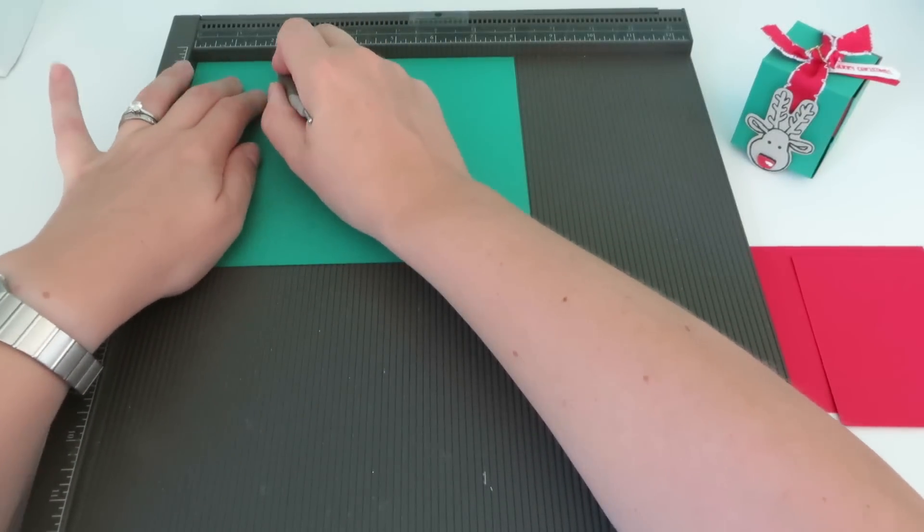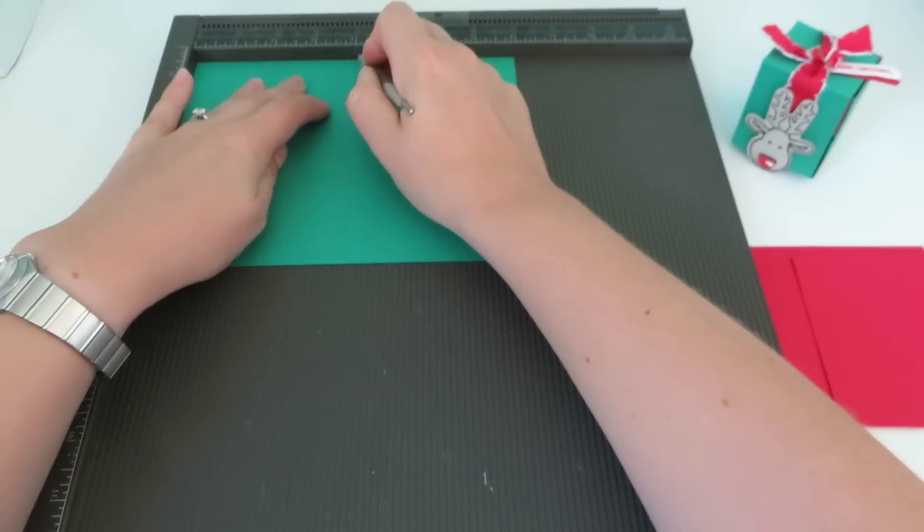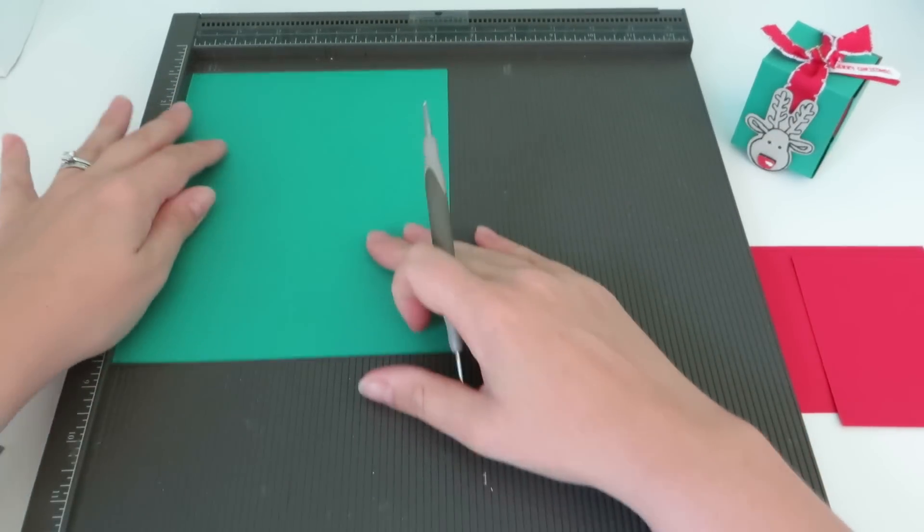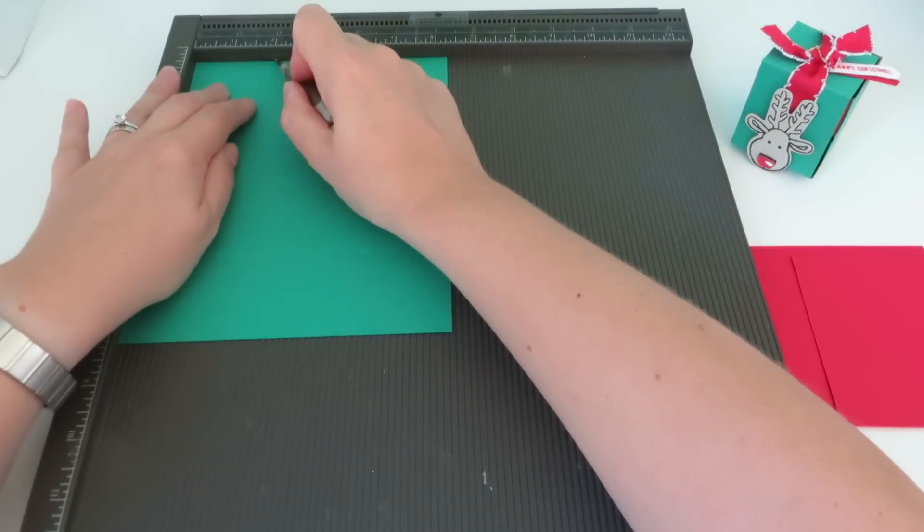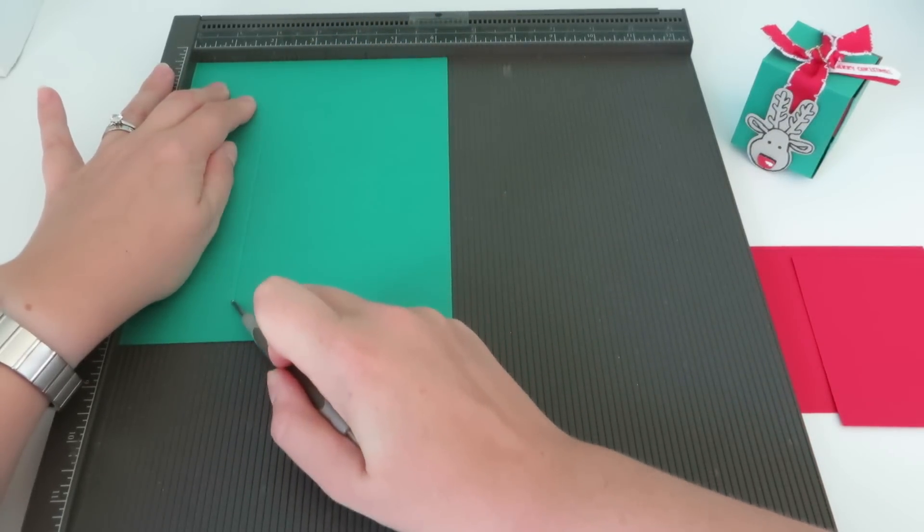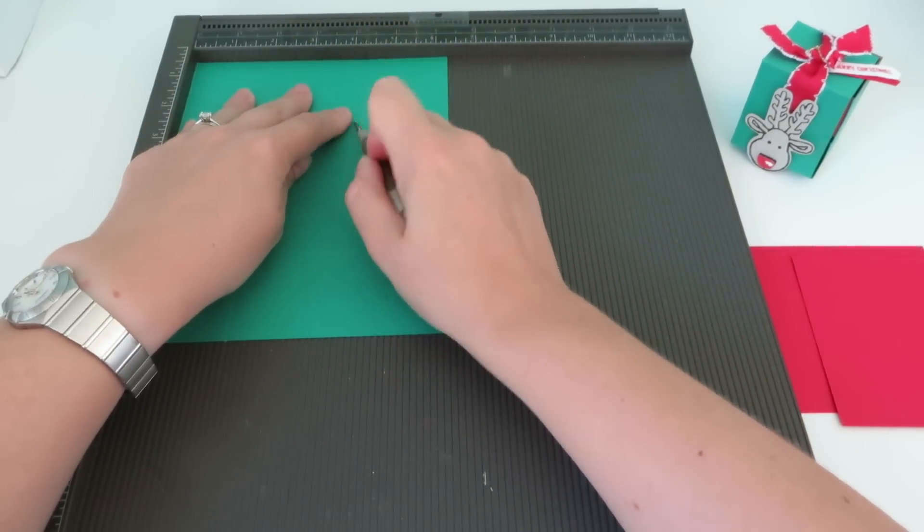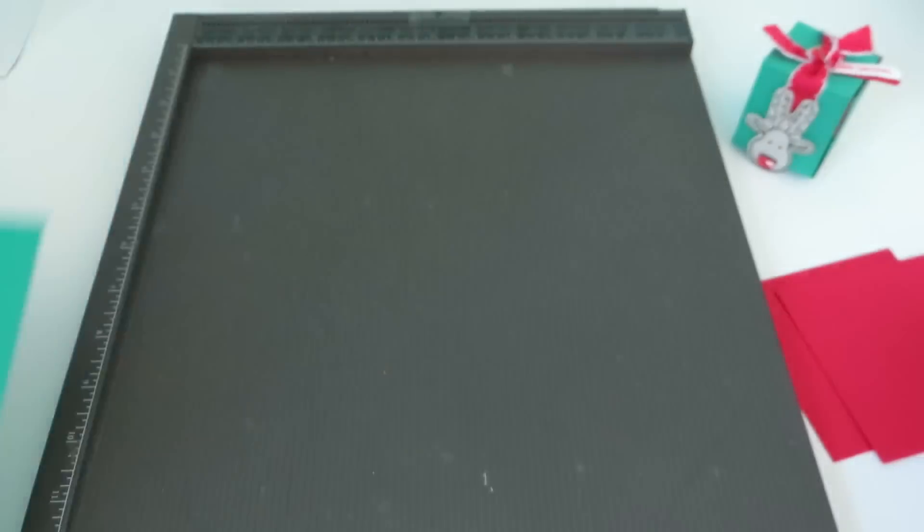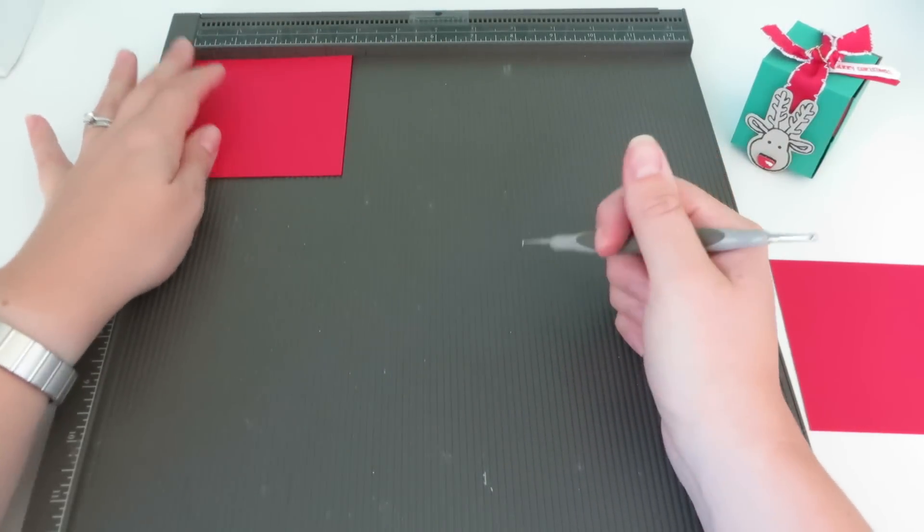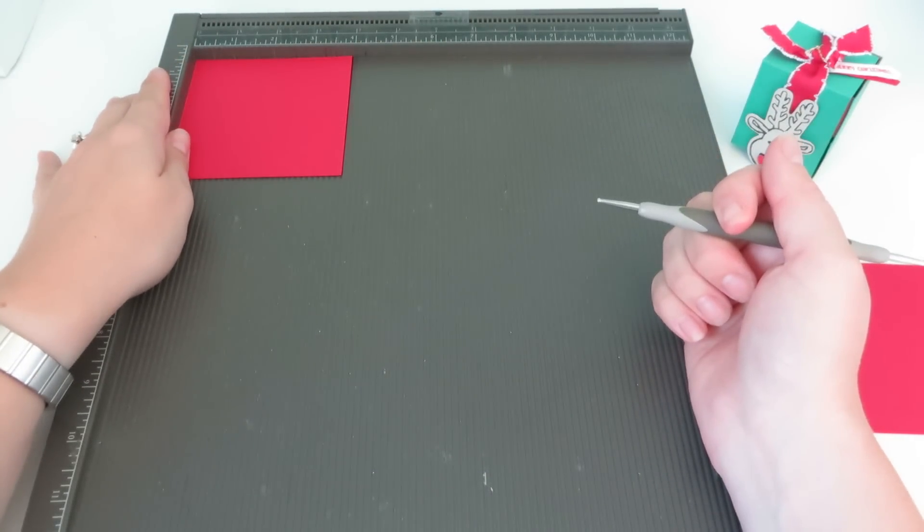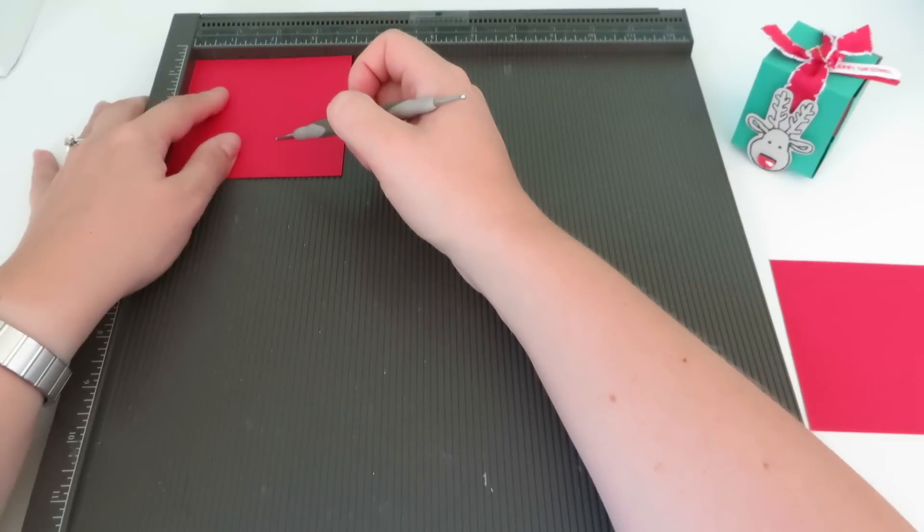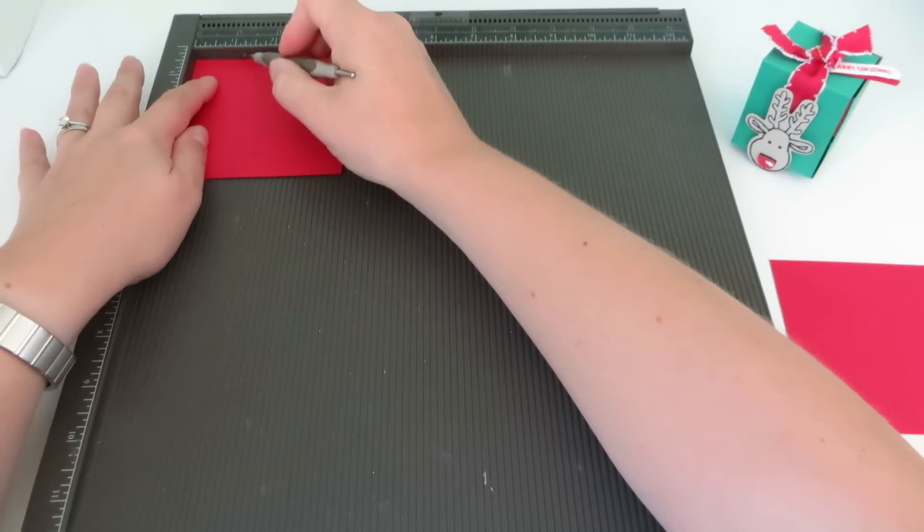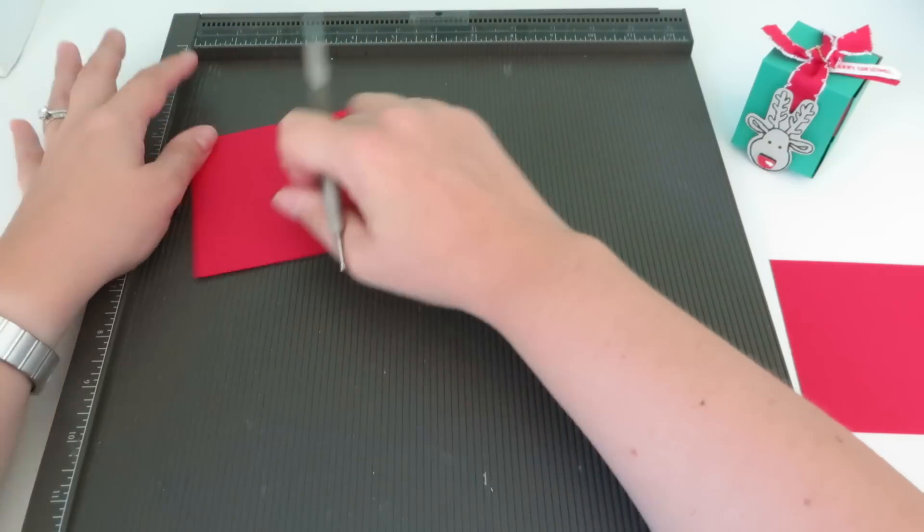I'm going to start with the Emerald Envy piece. And with the 8 inch by 6 1/4, with the 8 inch piece at the side, we are going to score it at 2 inches, 4 inches and 6 inches. And then we're going to turn it round and score it at 2 inches and 4 and a quarter inches.